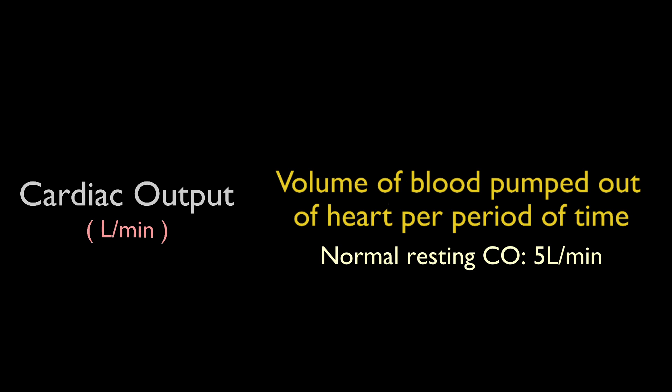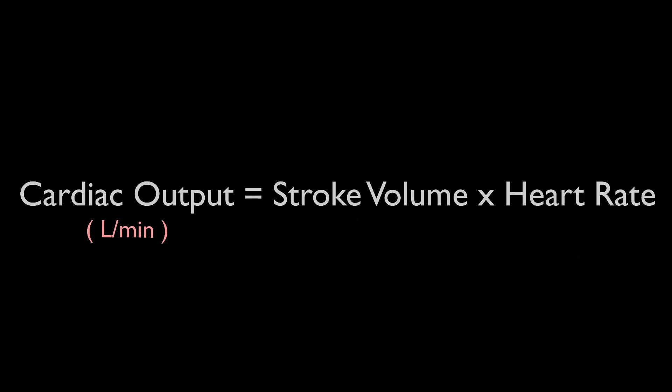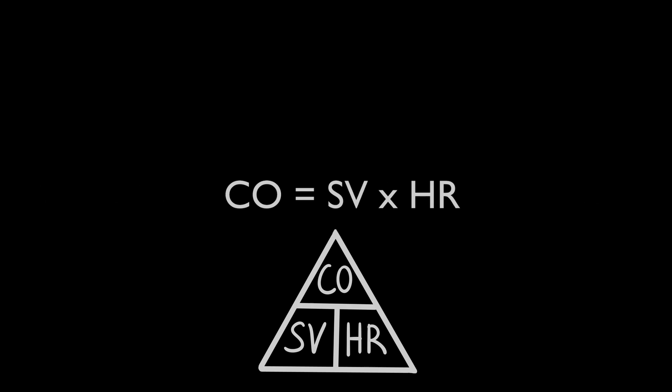There are two factors that determine cardiac output: stroke volume and heart rate. Multiplying them together will give the cardiac output. We will normally see the equation written like this.